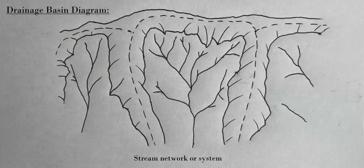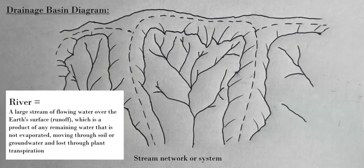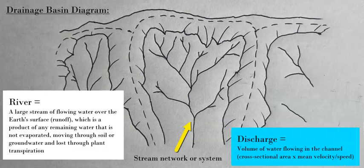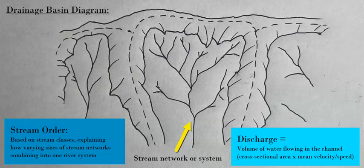Technically, a river is just a very large stream which has a large discharge of water flow going through it, measured in feet or meters per second. This is based on the cross-sectional width of the channel and the mean velocity of the water. Streams are broken into different sizes and different classifications, and we call this a stream order.